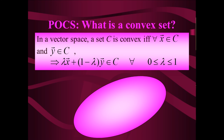So let's get started. The next slide shows a spheroid on the bottom, which turns out to be a convex set. The definition: in a vector space, a set C is convex if for every x in the convex set and y in the convex set, then lambda times x plus (1 minus lambda) times y is also in the convex set, as lambda varies between 0 and 1.